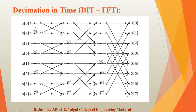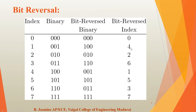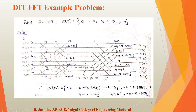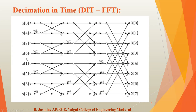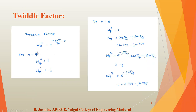We have to substitute the bit reversal order in the butterfly diagram. The input order becomes 0, 4, 2, 6, 1, 5, 3, 7. Then we find the twiddle factor values. The formula for the twiddle factor is W_N^r = e^(−j2πr/N). For N=4, the twiddle factors are 1 and −j. For N=8, we calculate W_8^0, W_8^1, W_8^2, and W_8^3. These twiddle factor values are then substituted into the butterfly lines.